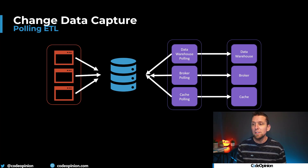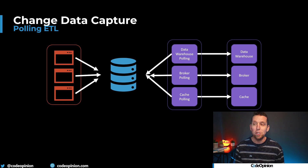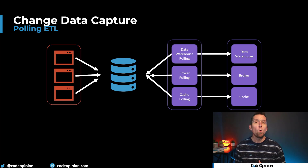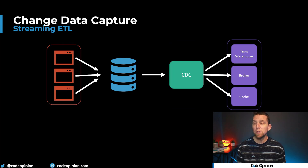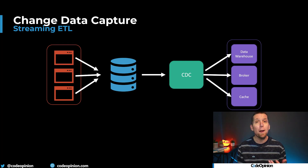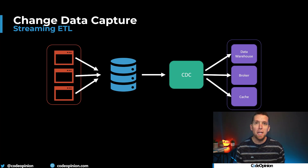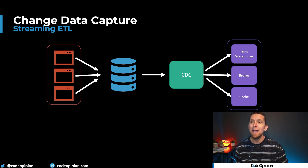Another common use case is cache invalidation, where we look at our database and identify what we need to invalidate in our cache. The benefit of CDC here is instead of being poll-based, we can move to a push-based real-time model. As changes are happening to our underlying database, our CDC process is monitoring and picking up on those changes, then immediately pushing that data to another system or process for our different use cases — our data warehouse, message broker, or cache — in a much more real-time fashion.